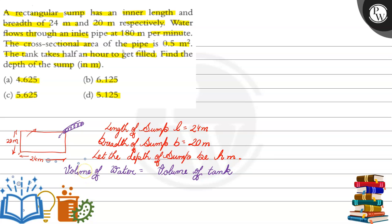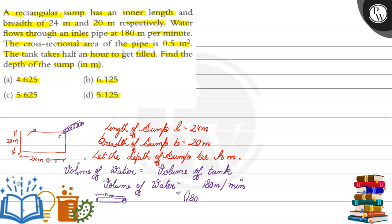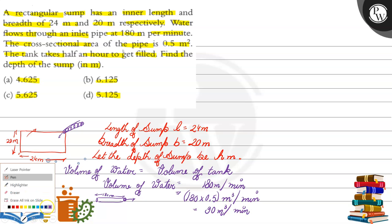अब हमें निकालना है कि actual में volume of water कितना outlet हो रहा है pipe से। हमें 180 meter per minute का rate दे रखा है। तो जो actual volume होगा, वो होगा 180 into cross-sectional area। क्योंकि अगर यह हमारे पास pipe है, तो इस length के according cross-sectional area से पानी बाहर आएगा। तो 180 into 0.5 = 90 meter cube per minute। तो volume of water हो गया 90 meter cube per minute।